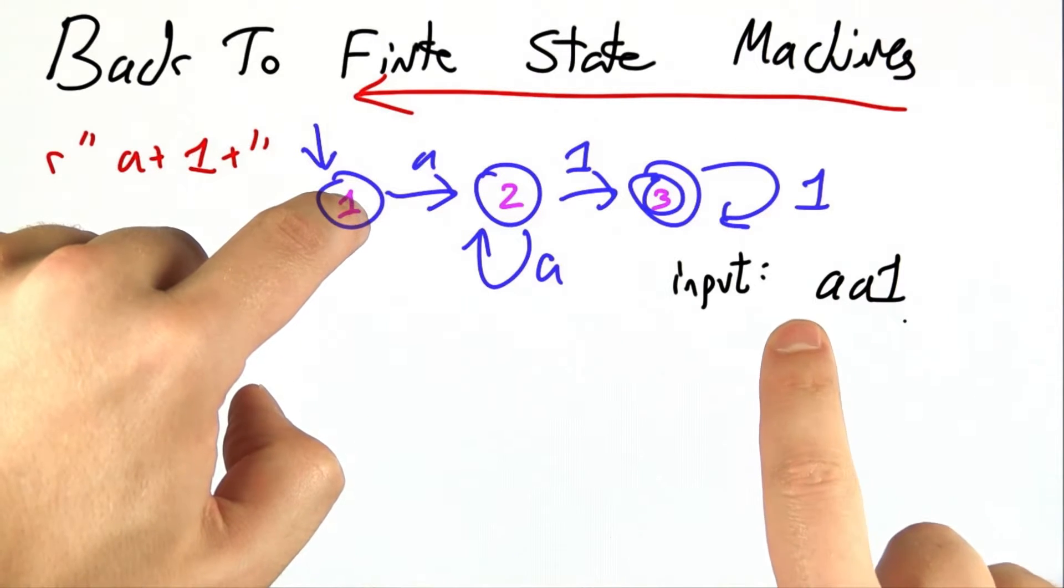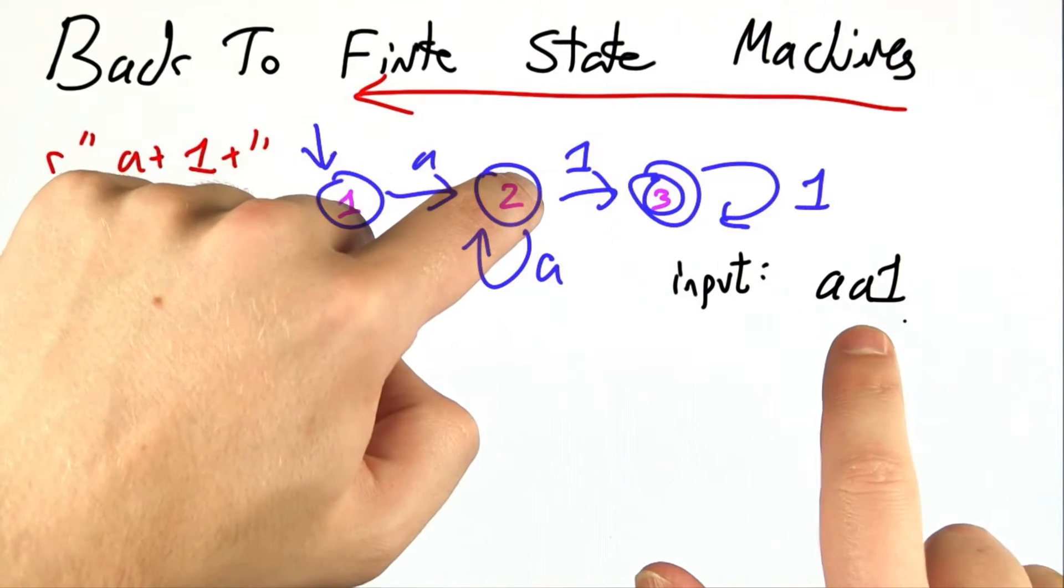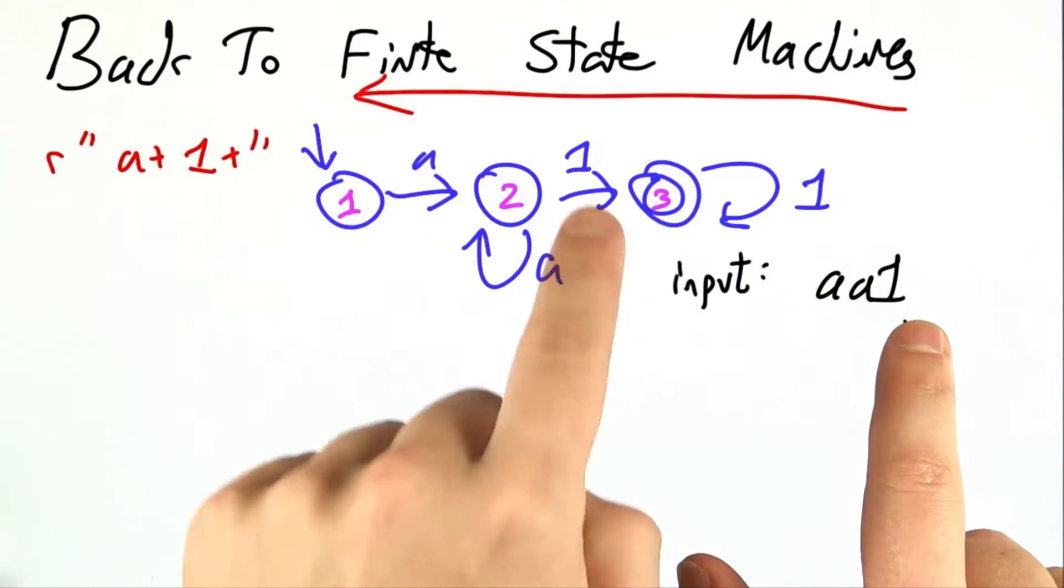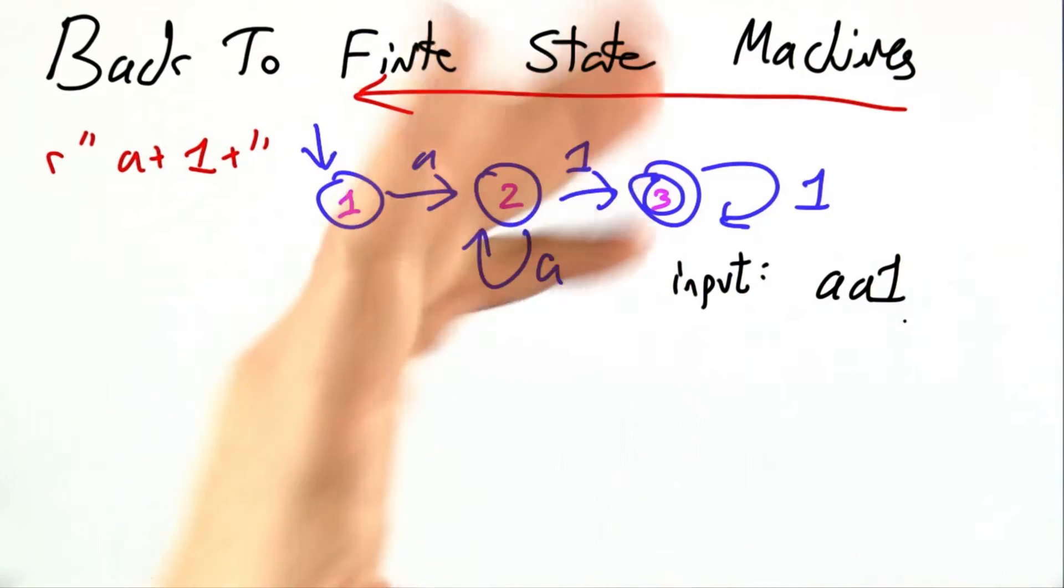We start in the start state. We haven't seen anything yet. We see the A. We're in state 2. We see the A. Self-loop back to state 2. We see the 1. We're in state 3. Oh, state 3 is an accepting state. Huzzah!